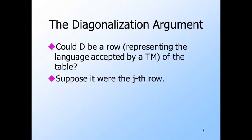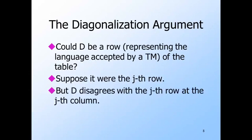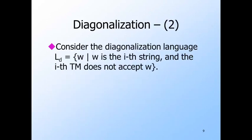D can't be row j because it disagrees with the j-th row in their j-th entries. Thus D cannot be a row, and therefore the language it describes — the language that contains the i-th string if and only if the i-th bit of D is one — is not the language of any Turing machine. This language can be described as the set containing the i-th string if and only if the i-th Turing machine does not accept the i-th string. Let's give a name to this language: L sub D, or the diagonalization language.